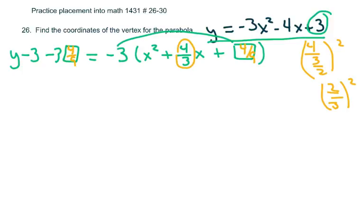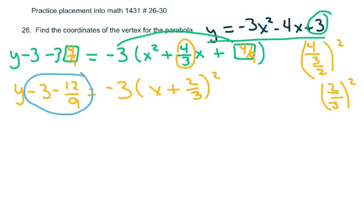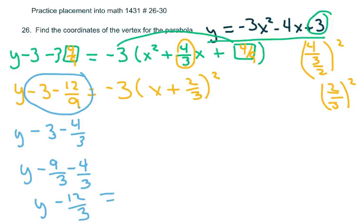So, clean this up a little bit. We're going to get y minus 3 minus 12 over 9 equals negative 3 times x plus half of 4 thirds is 4 sixths. Now, the only thing I really have to do is take care of this. Negative 12 over 9 is 4 thirds.